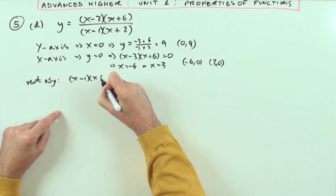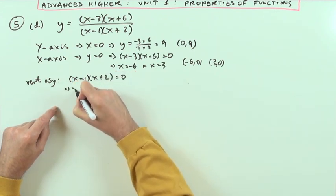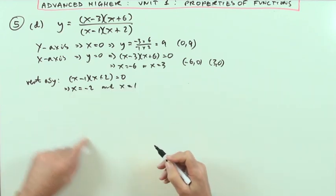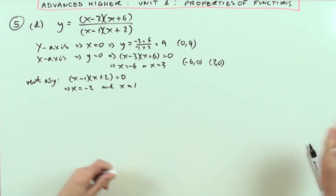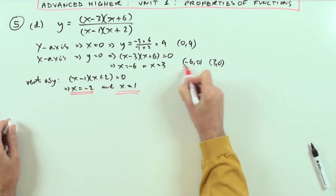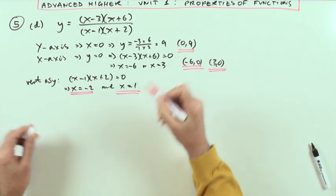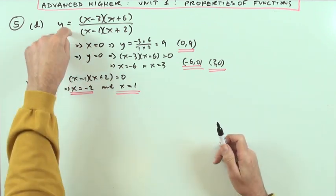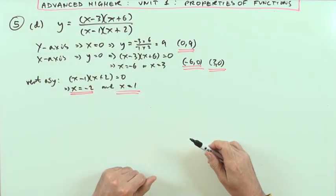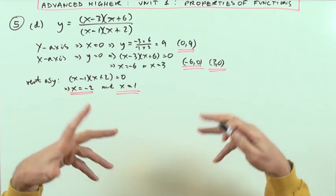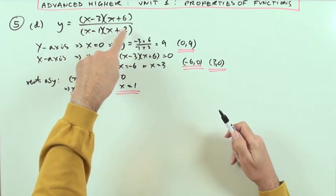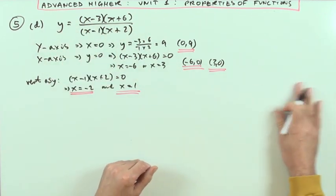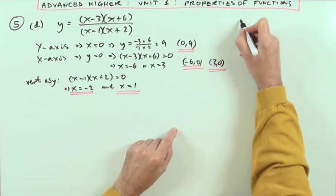Next, what about the vertical asymptotes? That means the denominator equals zero. Indeed it does — at x equals negative two and at x equals one. Now rather than go through these individually, there's something quite useful when you've got a bundle of factors: make up a table of signs to see when things are negative and positive across all the critical values.